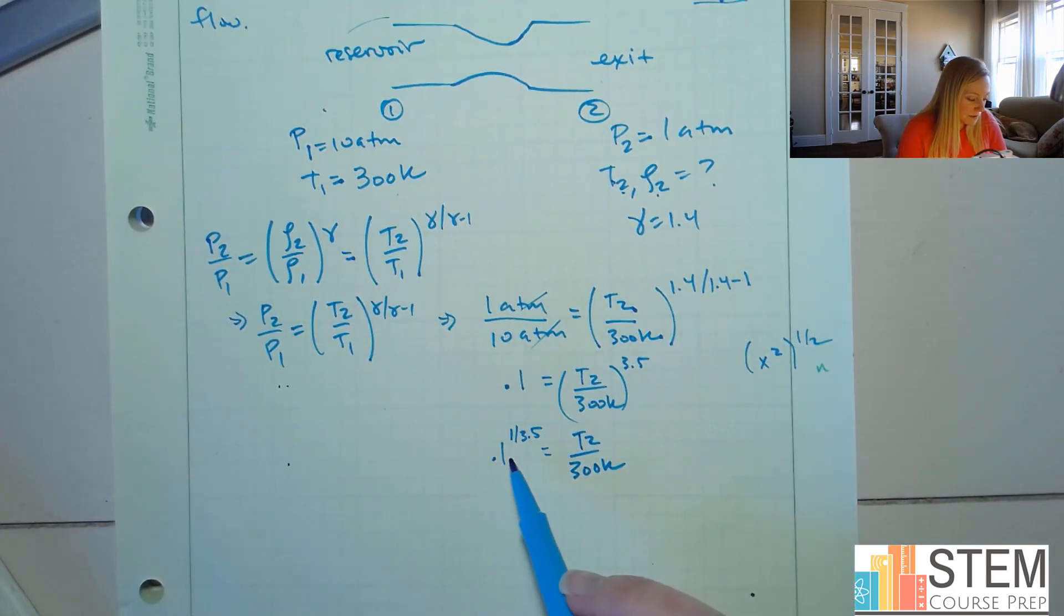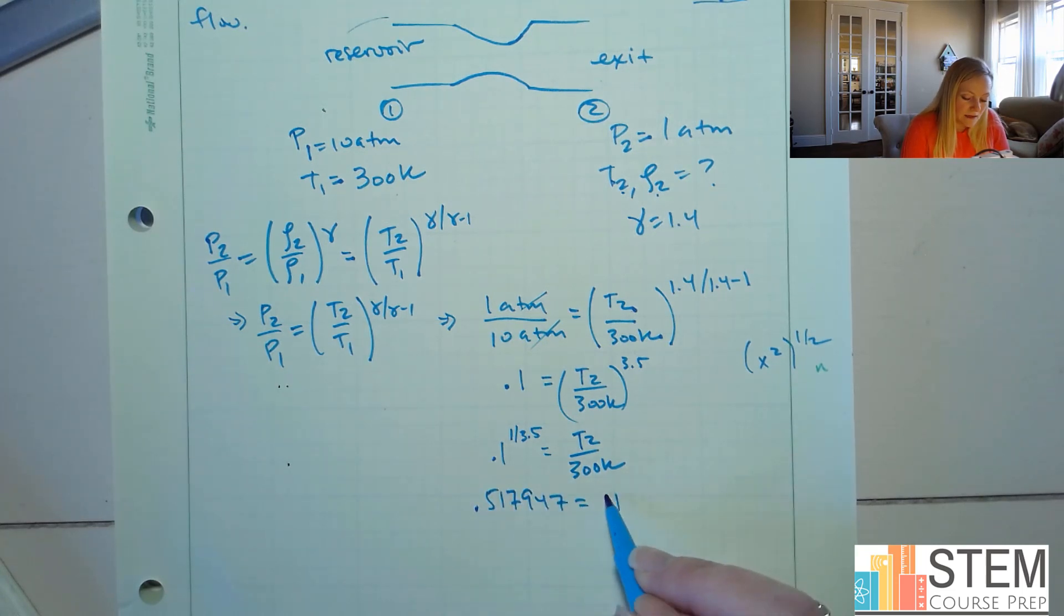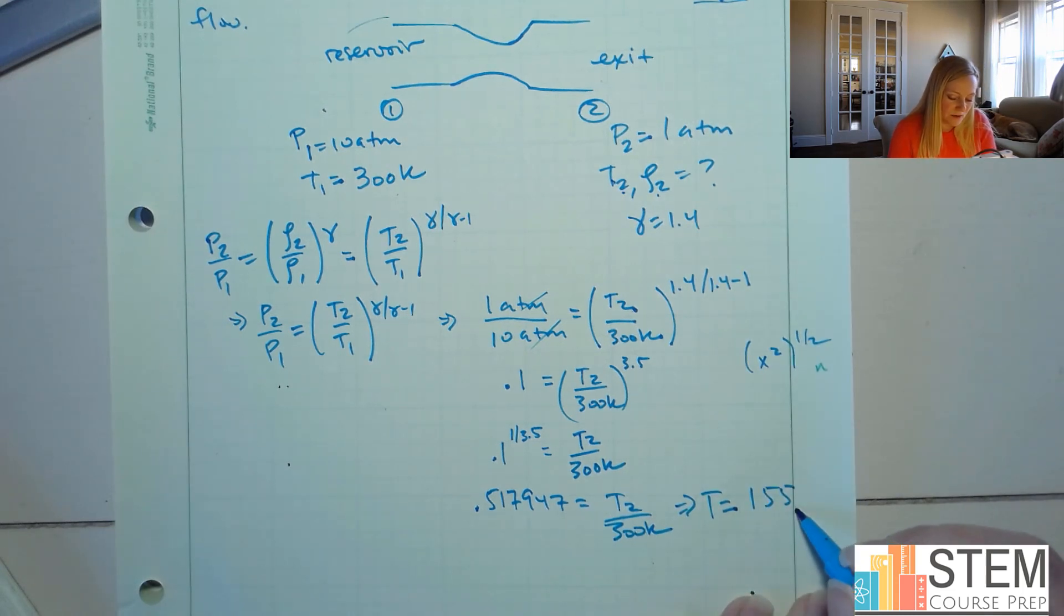Okay, now what do we get with this? That is going to give us 0.517947 equals T2 over 300. Now you can solve. So T2 is 155.38 Kelvin. And that's T2.